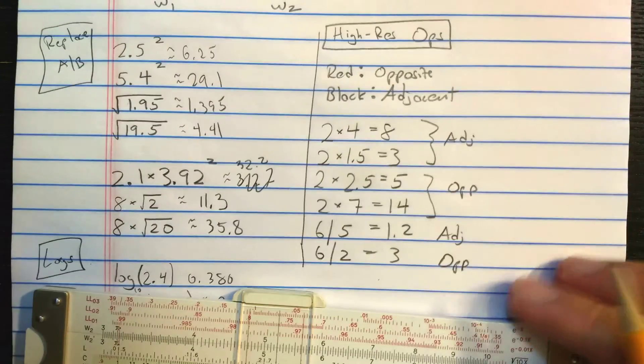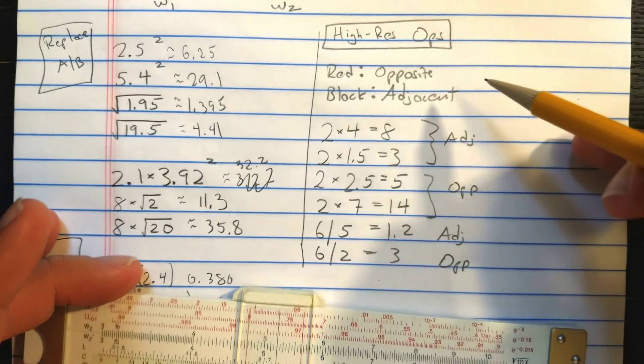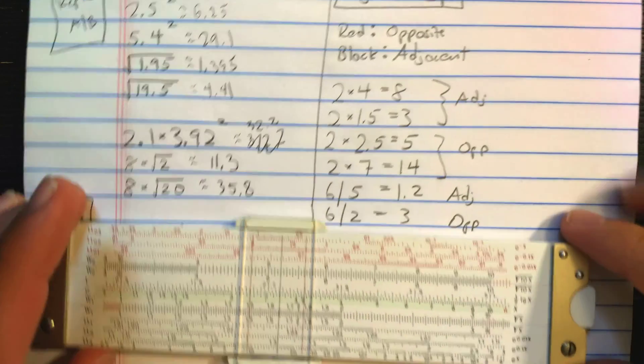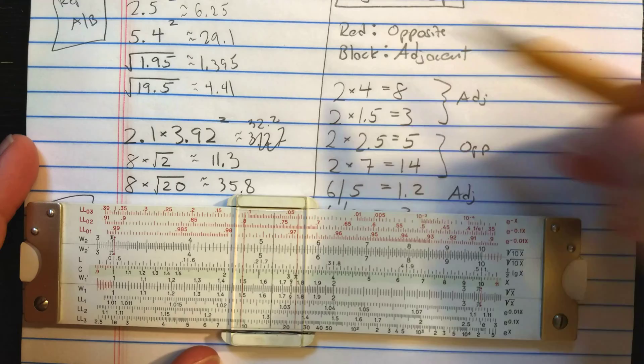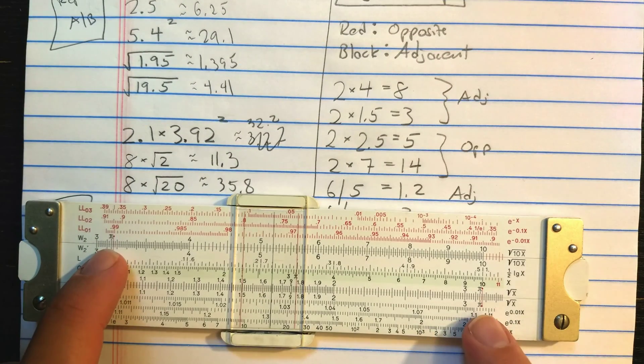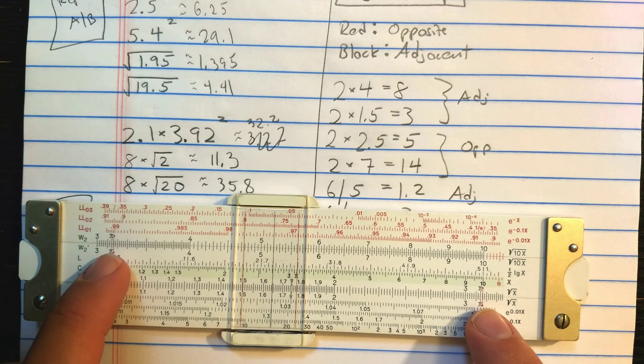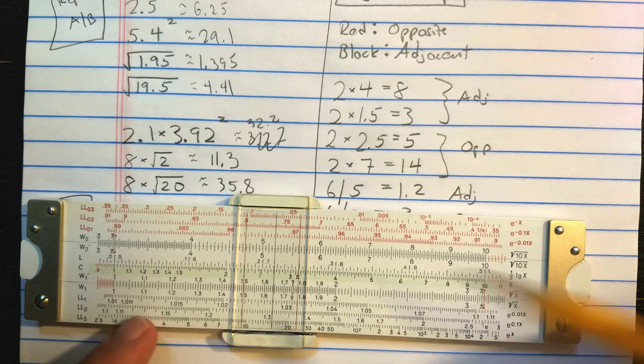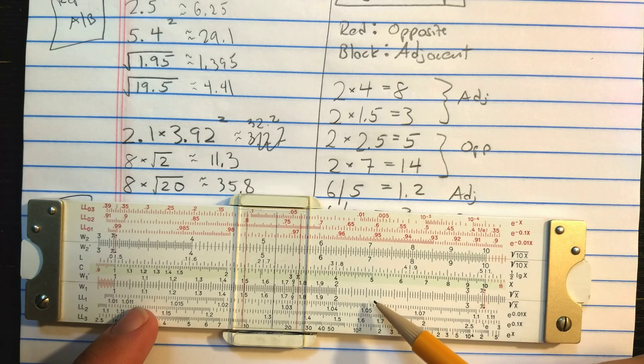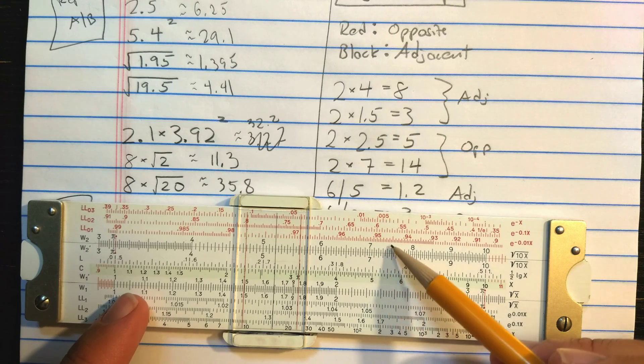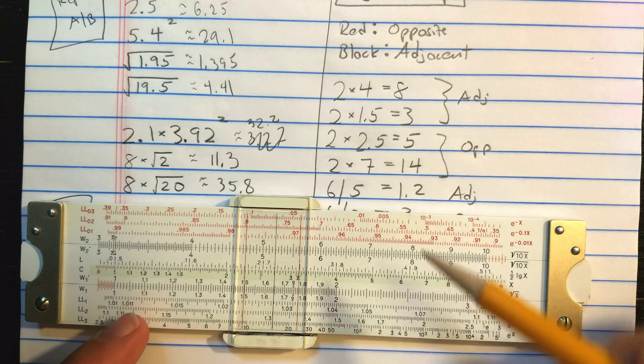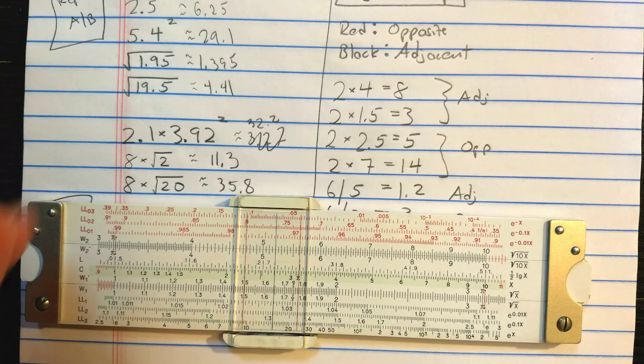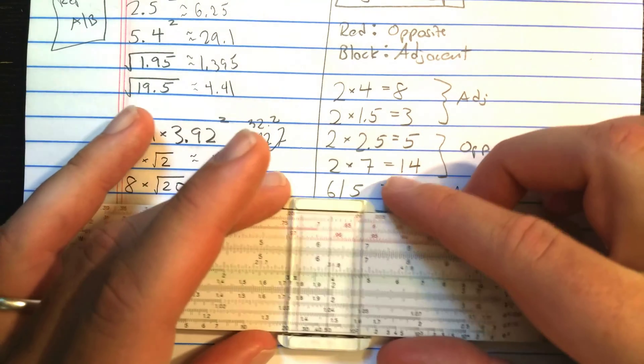Alright, but the main event here is how you do high resolution multiplication and division with the W scales. Okay, the trick is, you use a red index, which is the index here and the index here, which are marked in red. If your two numbers are on opposite things, so W2 and say W1 prime, those are opposite. Okay, but if you're adjacent, say here and here, or here and here, you use a black index. So let's demonstrate with operations that we know.